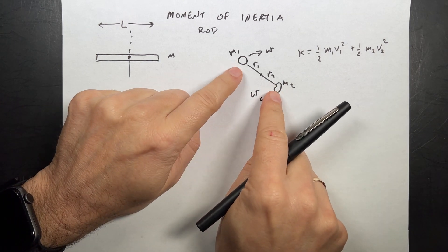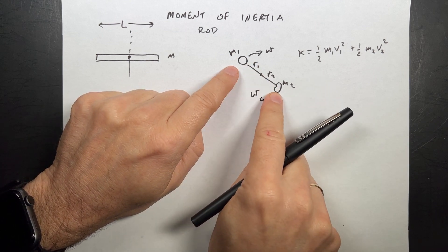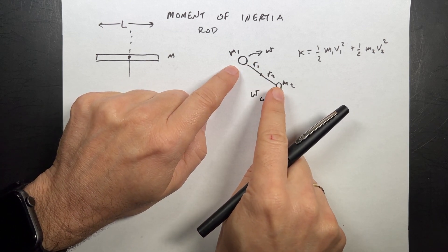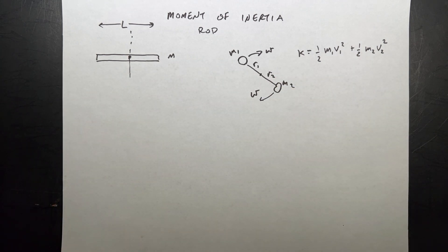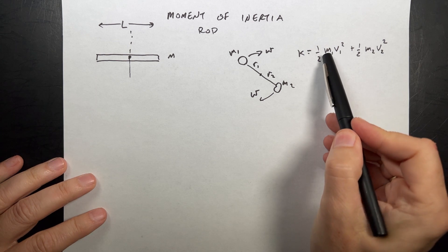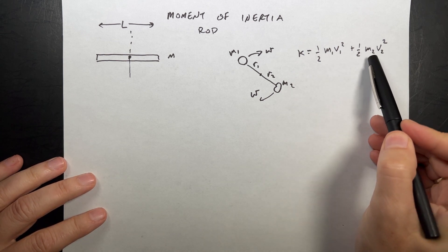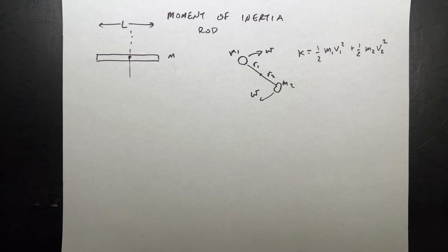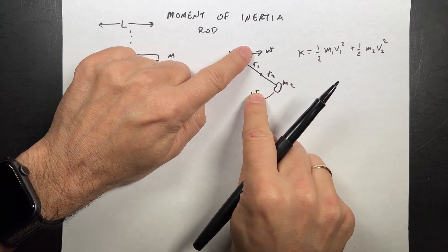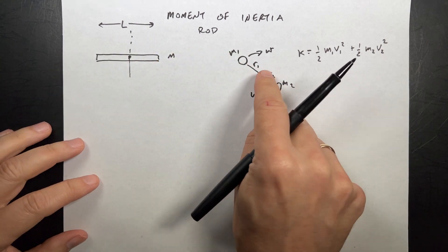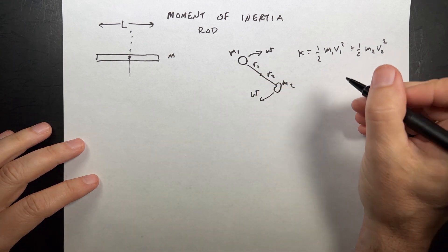Imagine that I have two masses connected by a very, very light stick, and these masses are rotating about the center. What matters is that I can write the kinetic energy for this system as the sum of one-half M1 V1 squared plus one-half M2 V2 squared. But if they have the same angular velocity — and that's the key here — the angular velocity, and this is about a fixed axis, it is an angular velocity vector.